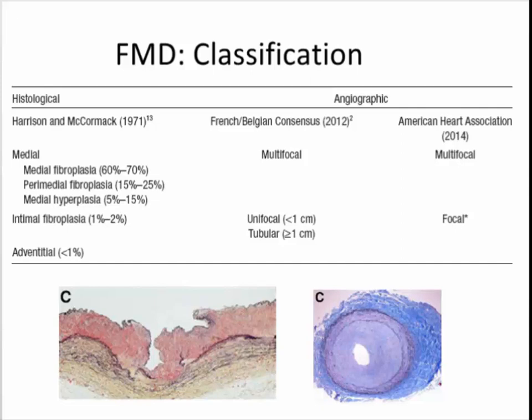A second, rarer cause is intimal fibroplasia, where the medial layer looks normal but there is an incredible proliferation of cells within the lumen. There are no lipid deposits, no macrophages — so these are not atherosclerotic lesions. What leads to this kind of lesion we don't know. Interestingly, patients with moyamoya disease all have this type of intimal fibromuscular lesion.